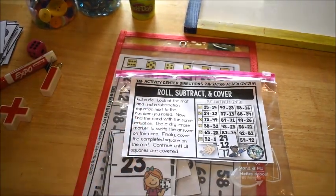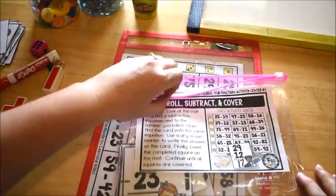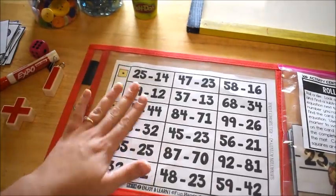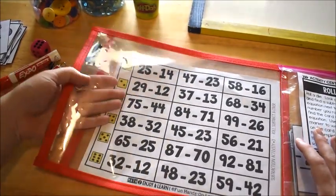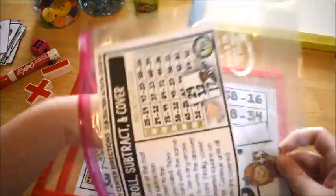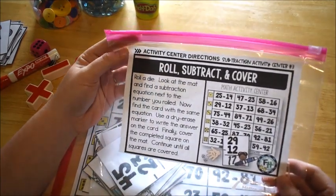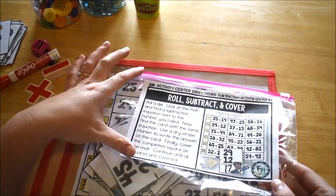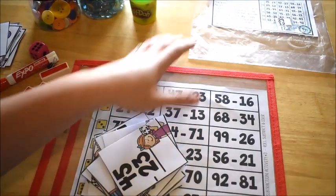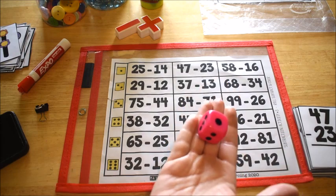Then the other activity that we did today is this. This is from a Math to Enjoy and Learn curriculum. I will leave a link below to that. This is called Roll, Subtract, and Cover. It comes with this mat that you print out. I put mine in a little plastic sleeve or you can laminate them. It also comes with these cards and this direction card that I always print out on label paper and then I stick it to the bag where I'm going to keep the activity so that I always have the directions with me.